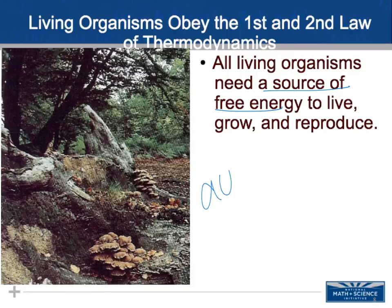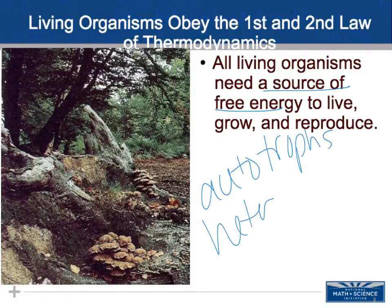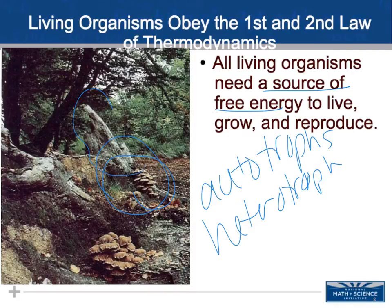Autotrophs get their input of energy from the sun — radiant energy. Heterotrophs get their input from consumption of food in the form of chemical energy. Once an organism dies, it's no longer using free energy, which increases the entropy of the system, because that organism gets decomposed — like the fungus breaking down this dead log, increasing entropy.